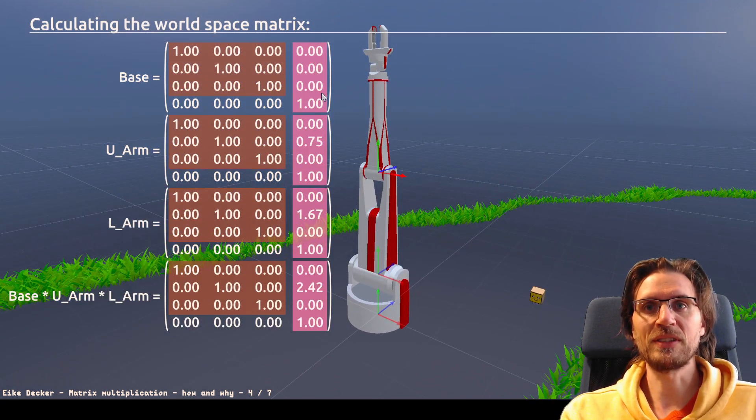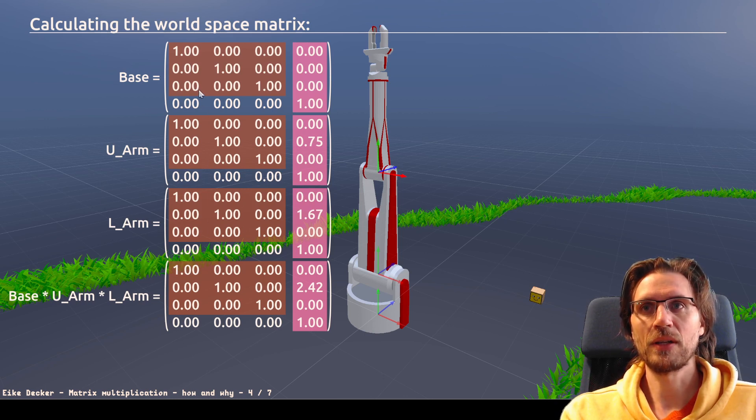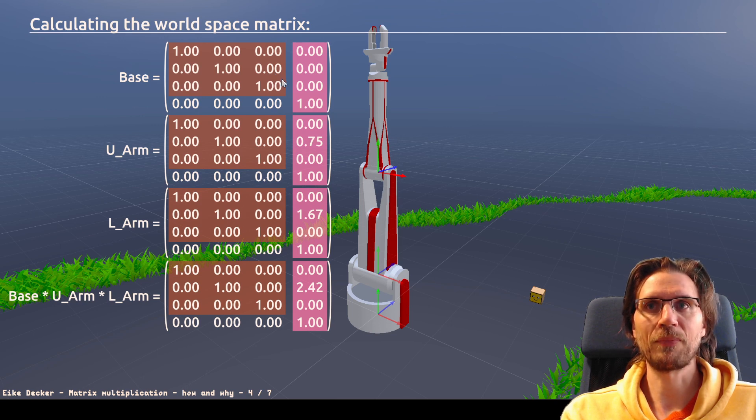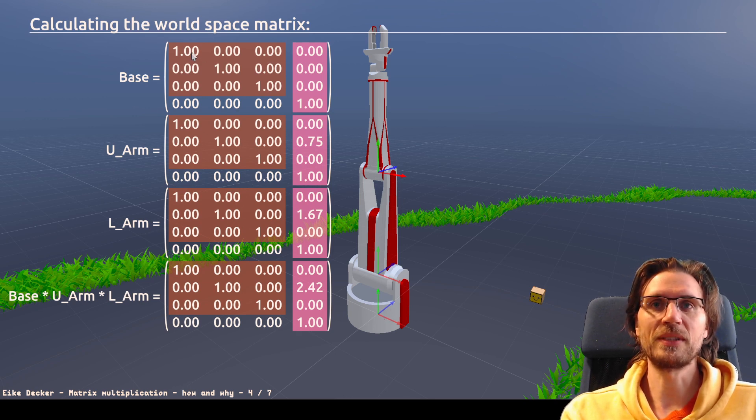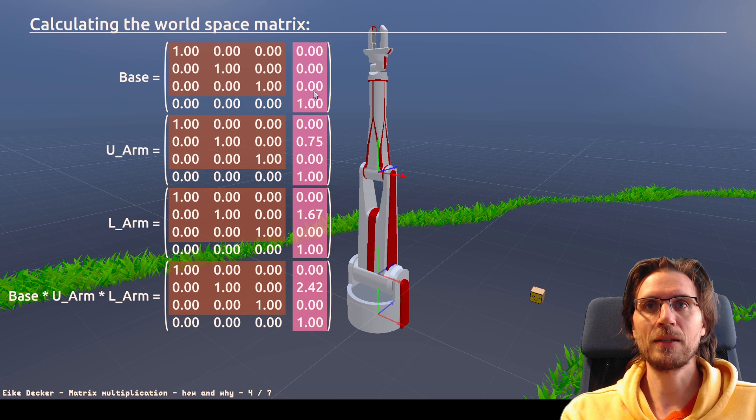Now, let's have a look at what these matrices are looking like. I'm taking three matrices. These are the local space matrices of our robot arm. So, the base sits conveniently at 0, 0, 0. And there's no rotation. So, what we see here is an identity matrix. That means everywhere it's zeros except on the diagonal where it's ones.